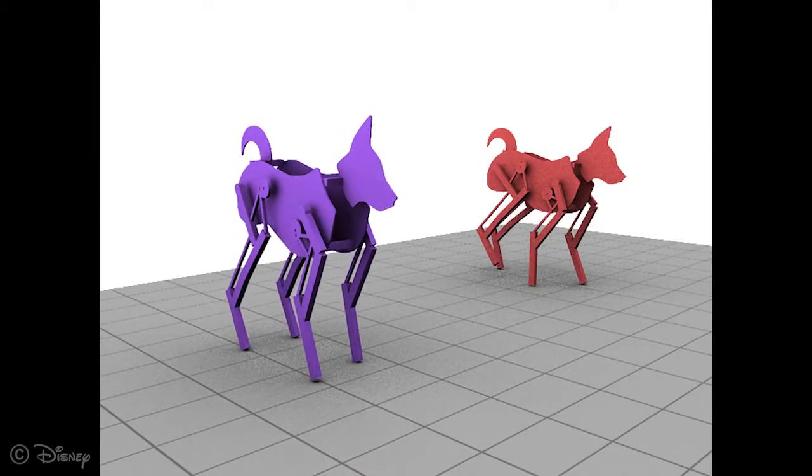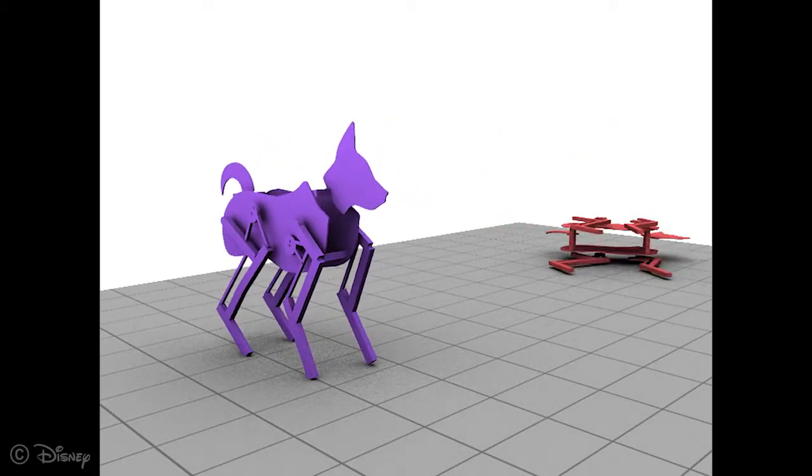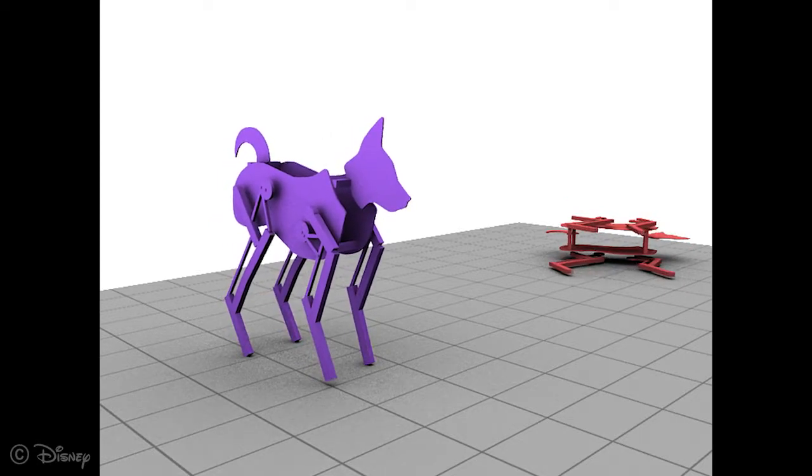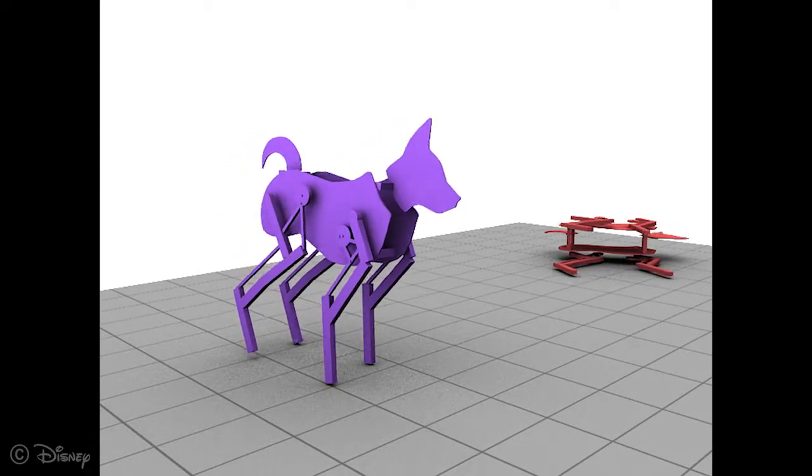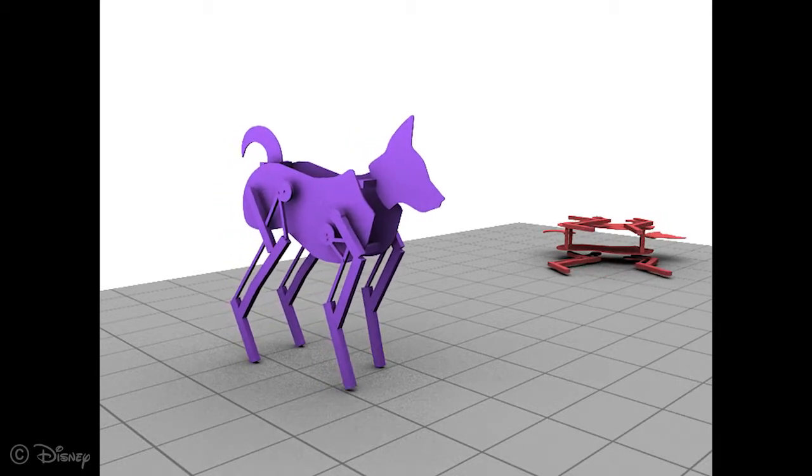Our parameterization includes the linkage structural parameters and the timings of the cranks. If we only optimize the timing parameters, we can still produce stable motion, but this creates very inefficient gaits with the automaton barely walking forward.